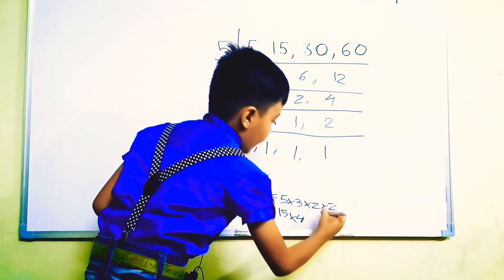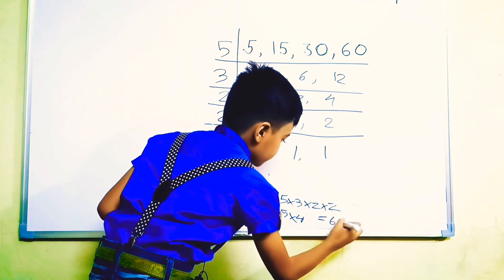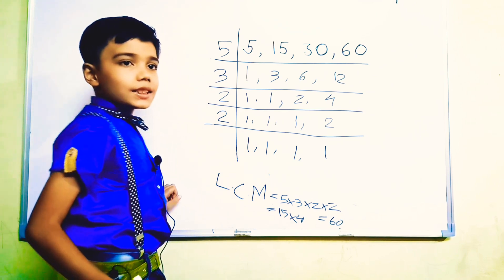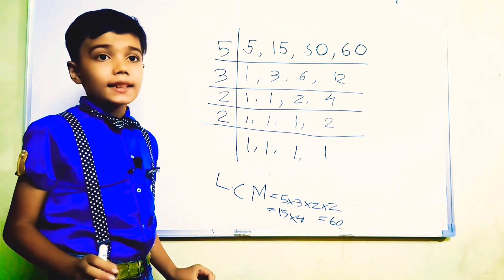15 fours are 60. So our LCM is 60. The conception method is over.